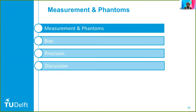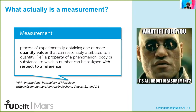To start with this, let's look into what a measurement actually is. We can find this in the metrology community — the science of measurement. In their international vocabulary, measurement is defined as the process of experimentally obtaining one or more quantity values that can reasonably be attributed to a quantity, which is a property of a phenomenon, body, or substance, to which a number can be assigned with respect to a reference.